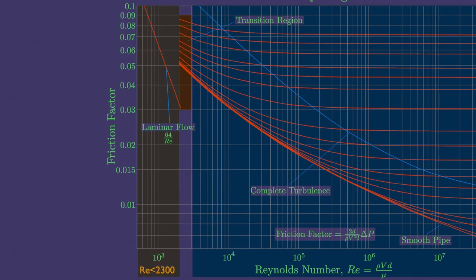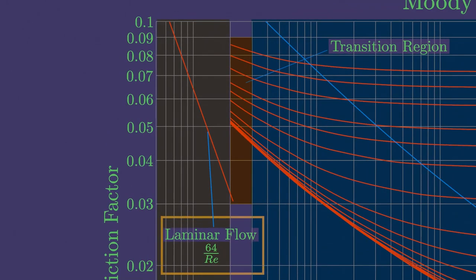So if Reynolds number is less than 2300, we can calculate the Darcy friction factor in accordance with this equation.